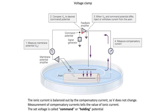The amplifier looks at the difference between the command voltage and the actual voltage of the neuron, and multiplies this difference by a very large amplification factor. If there is any small difference, it is amplified. The output of the amplifier is connected back to the neuron via a stimulating electrode. If there is any difference between the actual voltage and the command voltage, that difference is amplified and fed back into the neuron. If the voltage of the neuron equals the command voltage, the difference is zero, there is no feedback output, and the neuron stays at the command voltage.